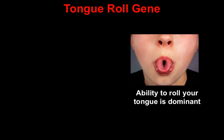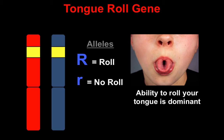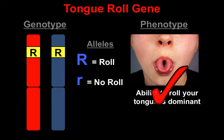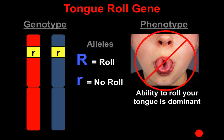Let's look at the tongue roll gene. The ability to roll your tongue is a dominant trait. The alleles are big R for can roll, and little r for can't roll. Your genotype is which alleles you actually have on your chromosomes, and your phenotype is whether or not you can physically roll your tongue. If your genotype is big R, big R, your phenotype is yes, you can roll your tongue — that's the dominant phenotype. If you have big R, little r, again yes, you can roll your tongue. If you have little r, little r, your phenotype is no — you have the recessive phenotype and cannot roll your tongue.